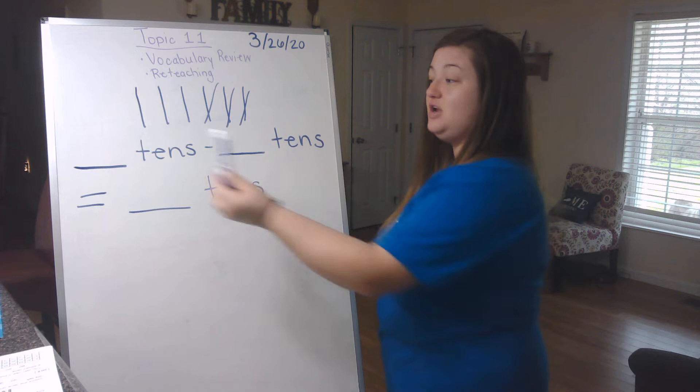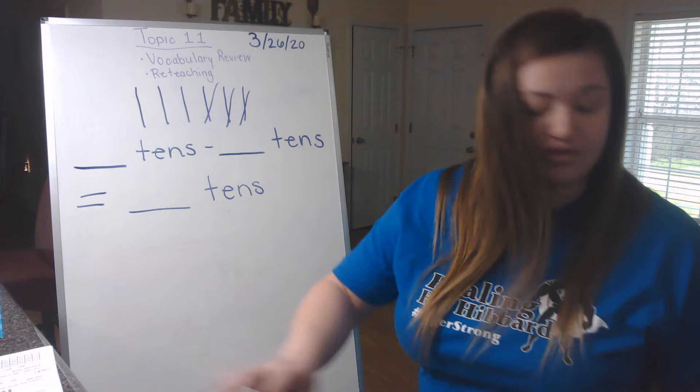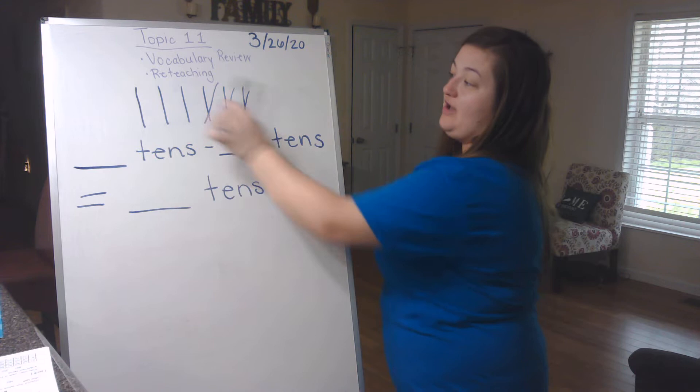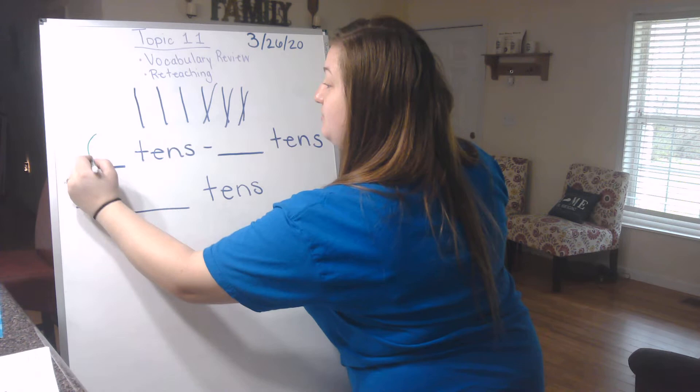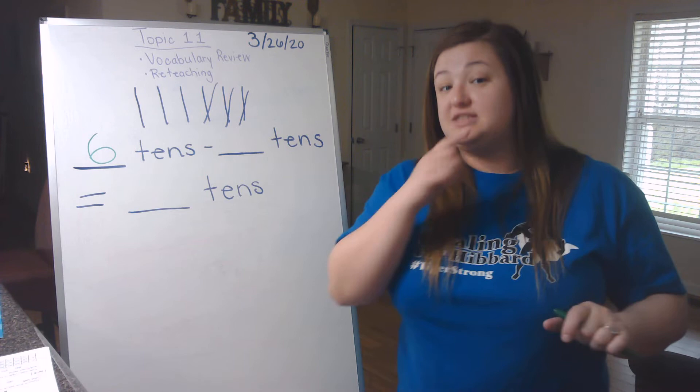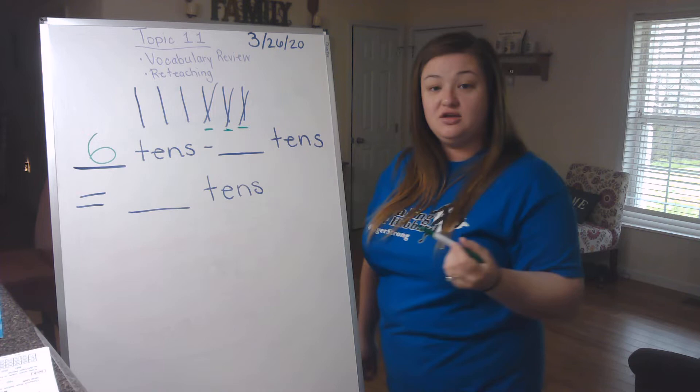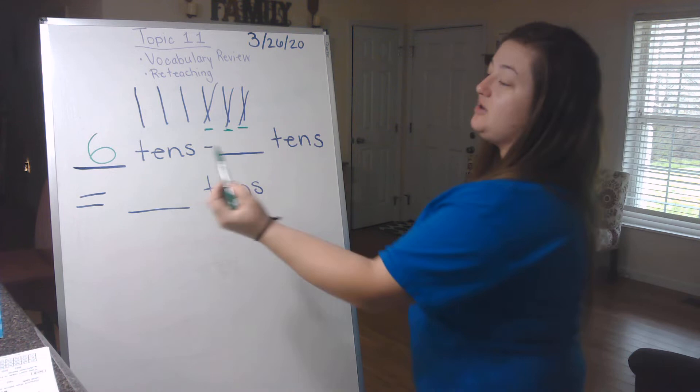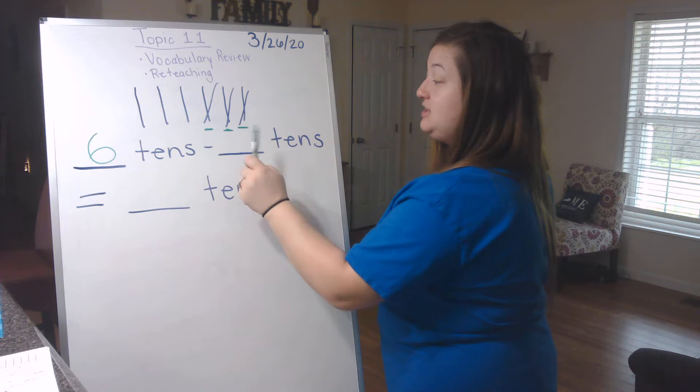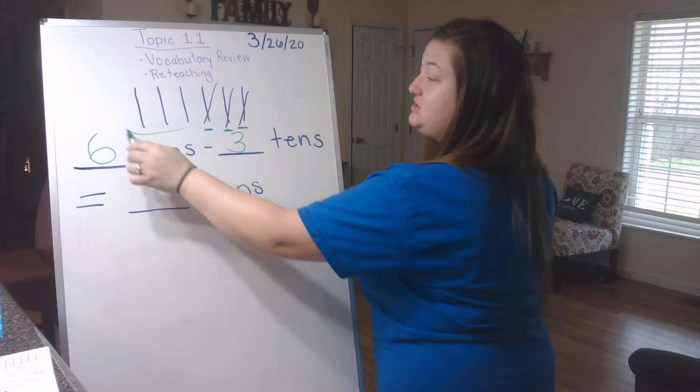So first, this first blank, since we're subtracting, we have to start with our largest number. So we're going to do however many we have all together. So I've got six tens. So six is going to go in that first blank. And then look at your tens guys on your paper and see how many of those tens have a line through them. And if you look, I see one group that has a line through it, two, and three.